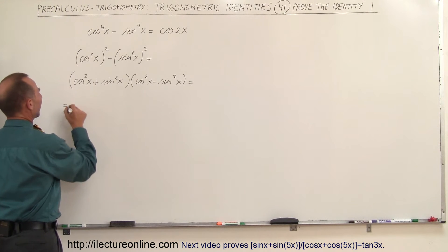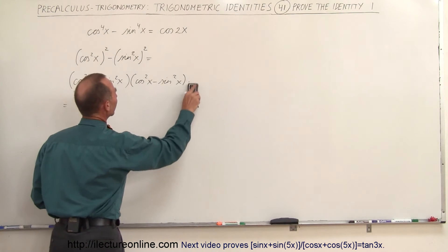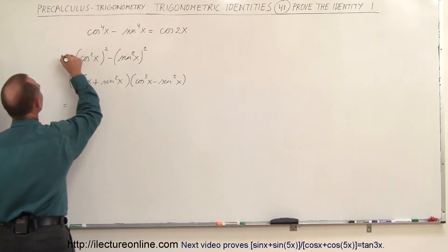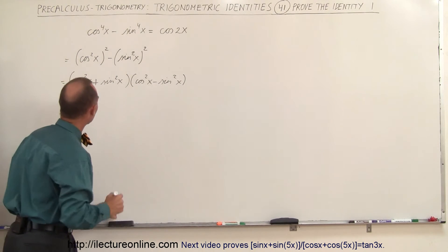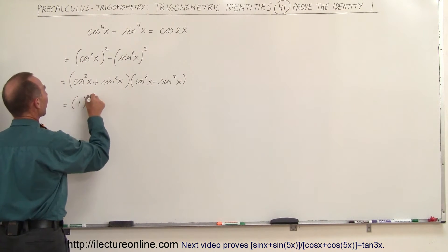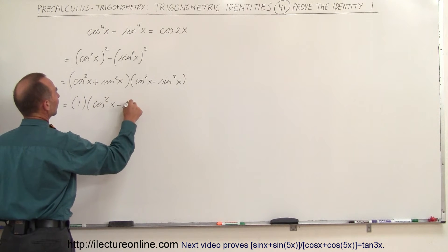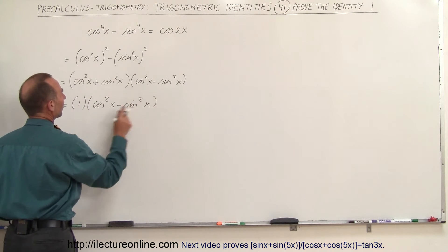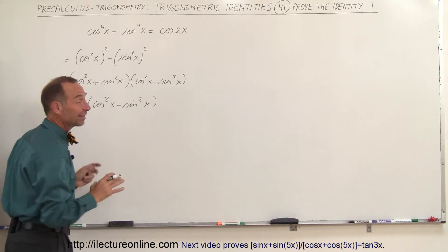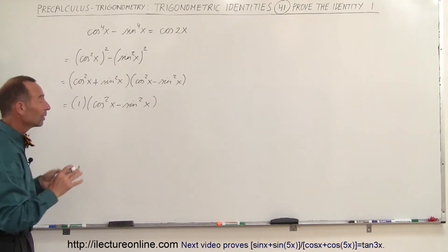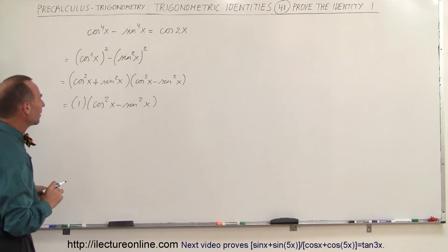I like to write the equal sign in the front and in the back. So this becomes 1 times the cosine squared of x minus the sine squared of x. And maybe some of you might already recognize that this is equal to an identity, but we'll leave that till later.